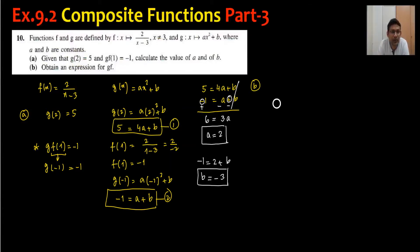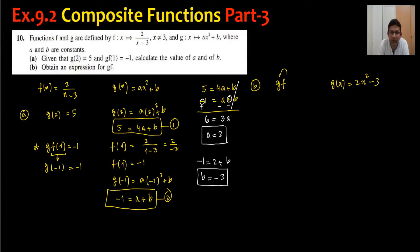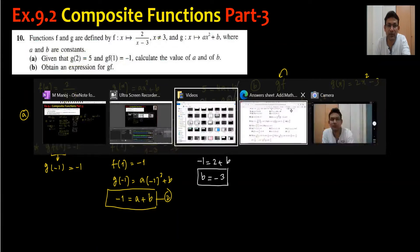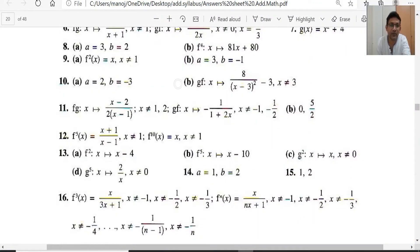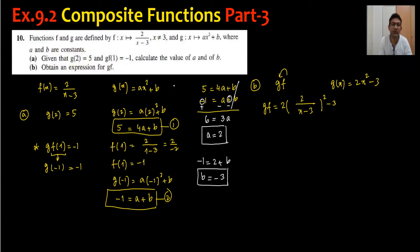Moving to part (b), they ask us to obtain an expression for gf. Now we know g(x) equals 2x squared minus 3. We substitute f into g: g of f(x) equals 2 times (2 upon x minus 3) squared minus 3. You can leave it in this form or expand — either way is acceptable. The answer matches: 2 upon x minus 3 all squared, times 2, minus 3.